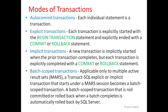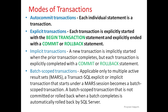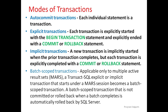Now we will see the modes of transaction. First is auto-commit transactions, where each individual statement is a transaction. Second is explicit transactions, where each transaction is explicitly started with the BEGIN TRANSACTION statement and explicitly ended with a COMMIT or ROLLBACK statement. Third is implicit transactions, where a new transaction is implicitly started when the prior transaction completes, but each transaction is explicitly completed with a COMMIT or ROLLBACK statement.